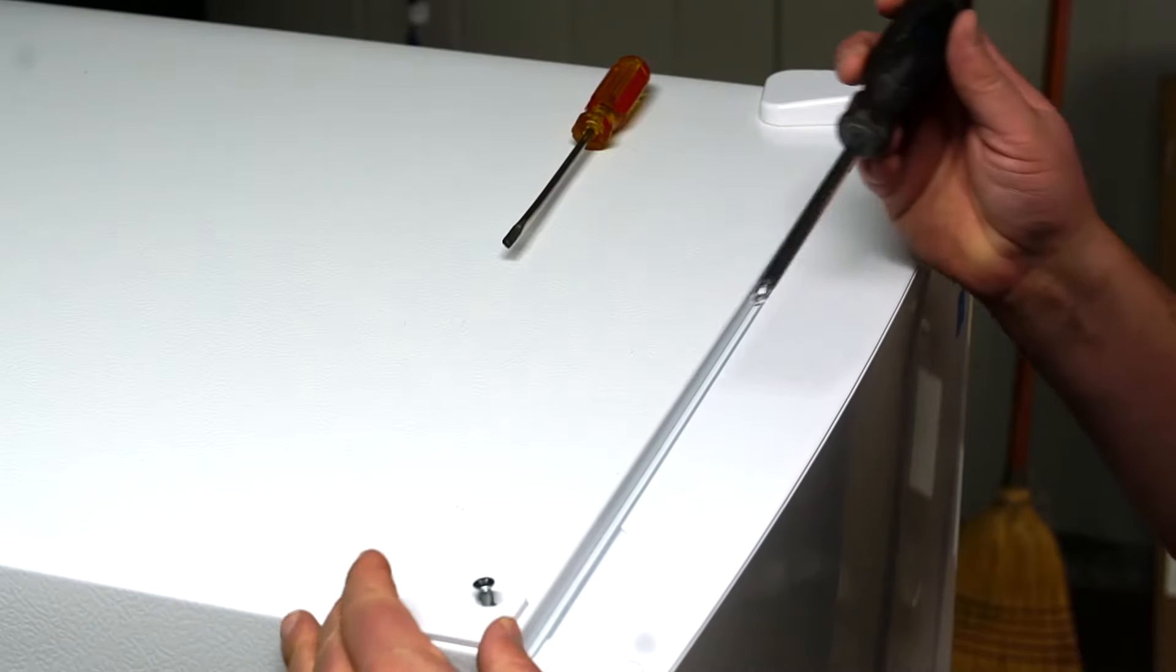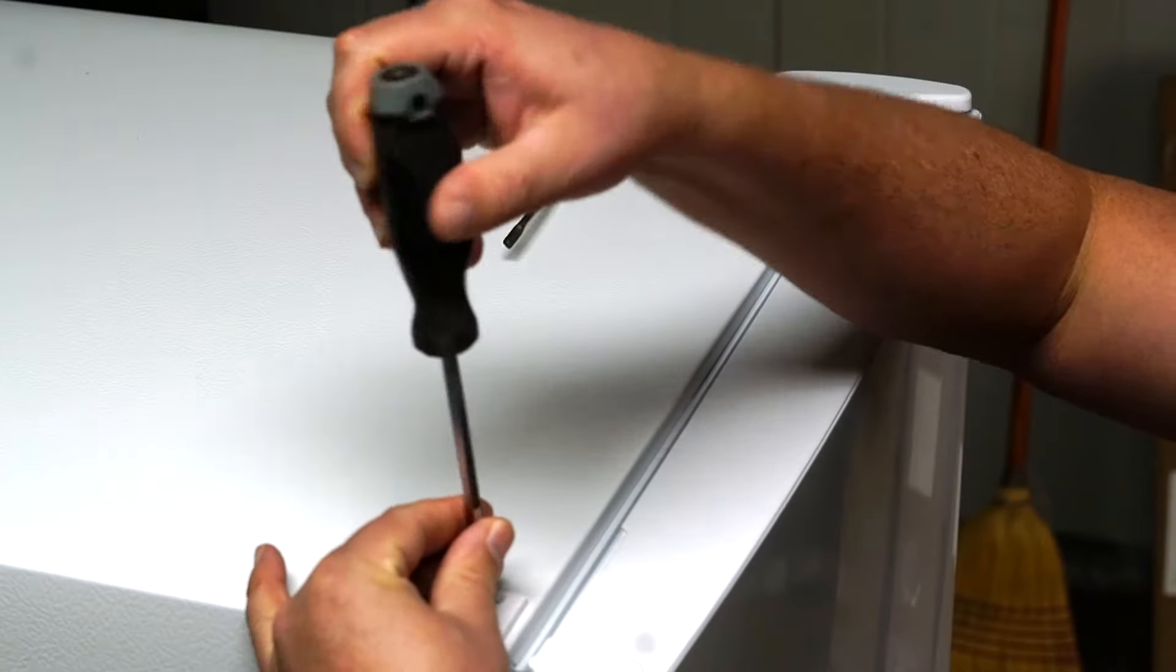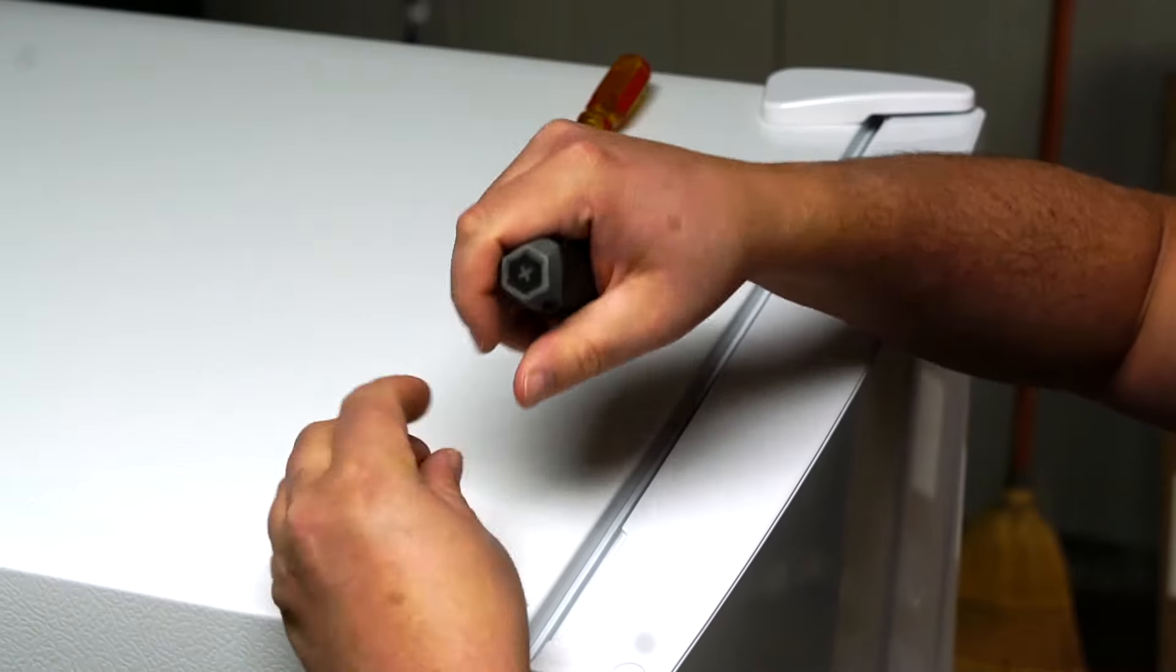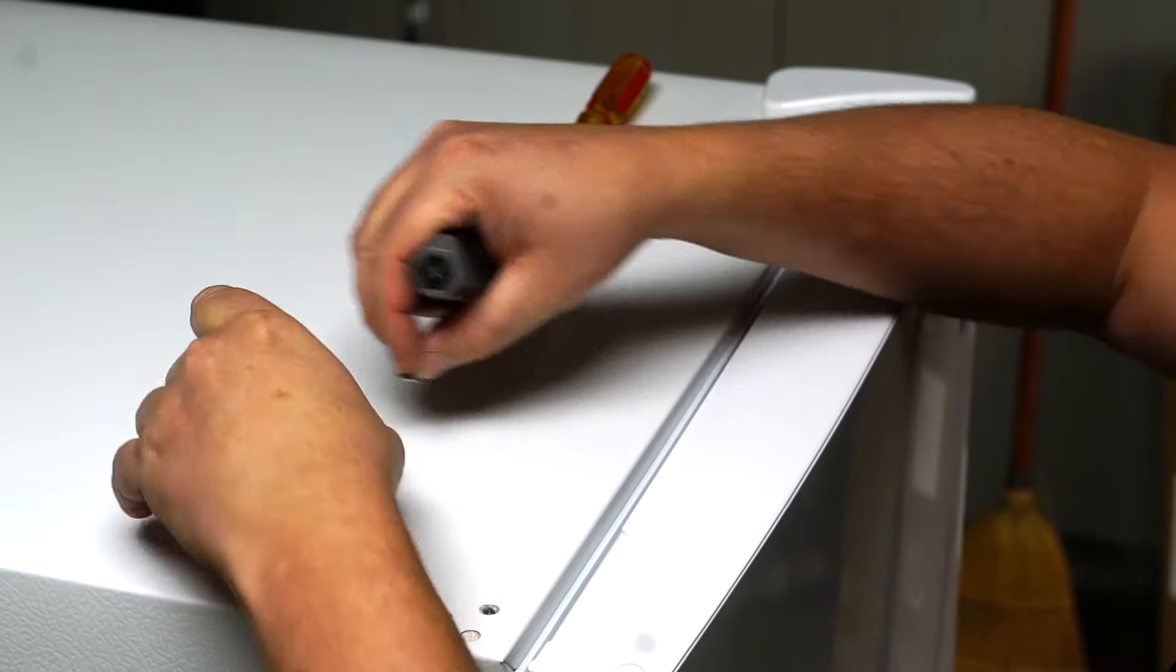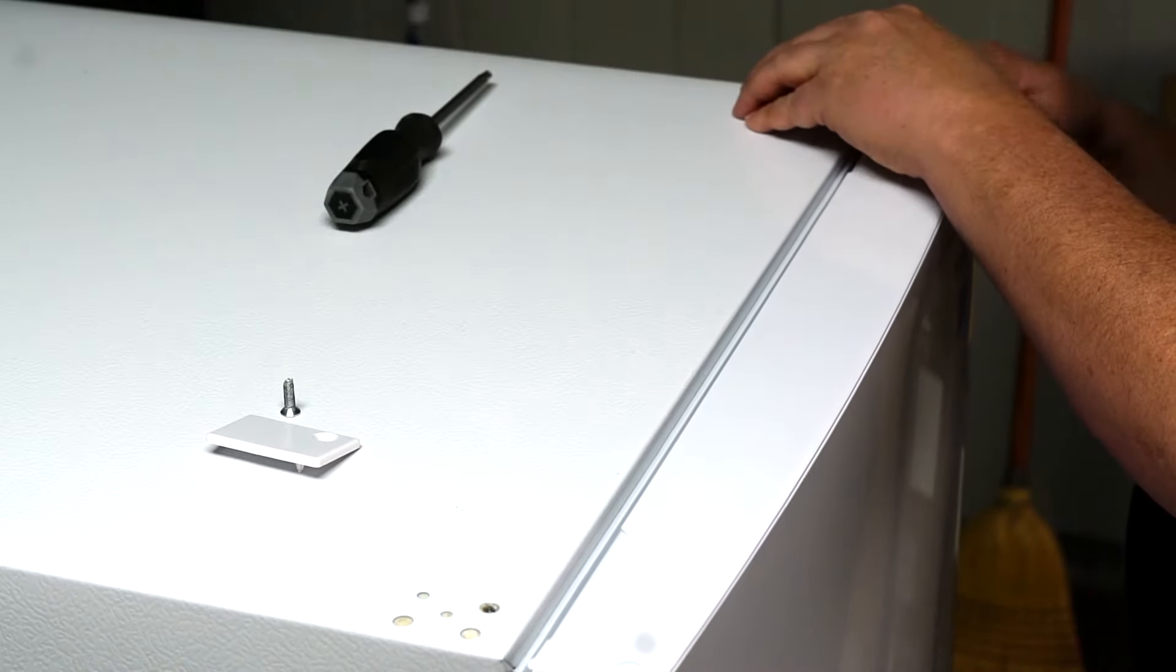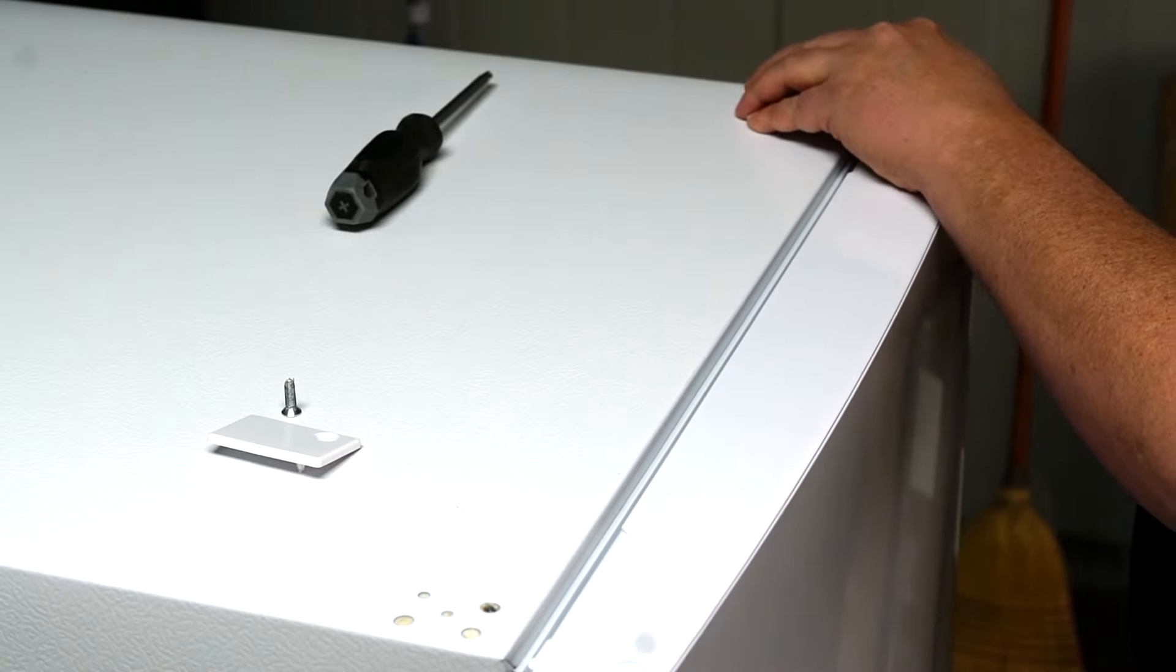One of the first steps we take is to remove the hinge cover plate. Then we pop the cap off the other hinge plate to reverse the door.